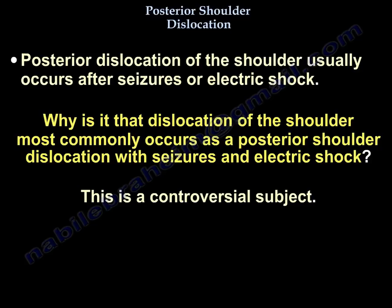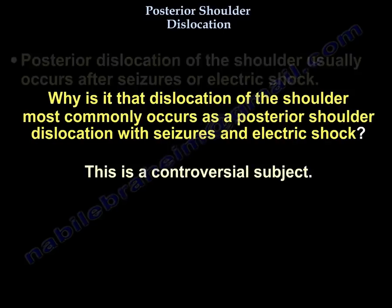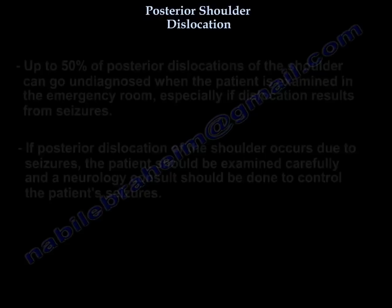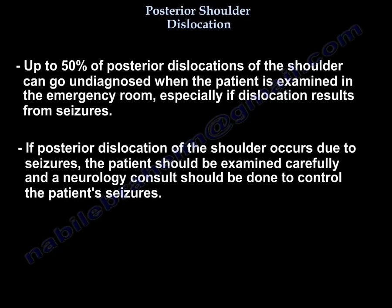That is a controversial subject. Some people believe that the shoulder internal rotator muscles — the pectoralis major, latissimus dorsi, and subscapularis — are stronger than the external rotator muscles. Up to fifty percent of posterior shoulder dislocations can go undiagnosed when the patient is examined in the emergency room, especially if the dislocation results from seizures.